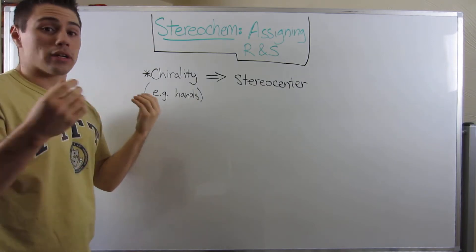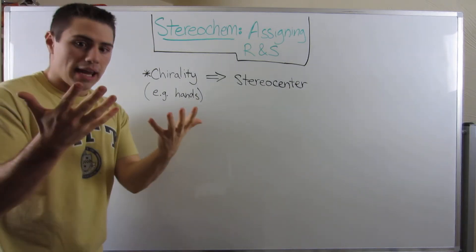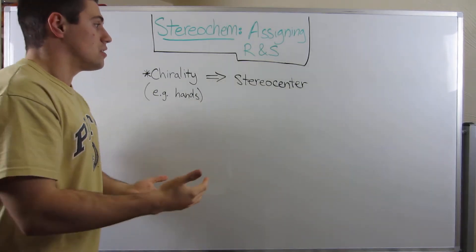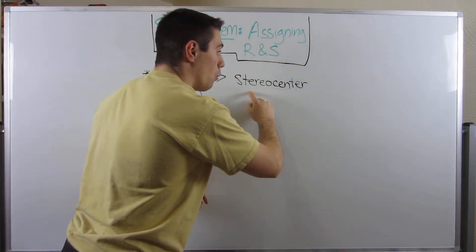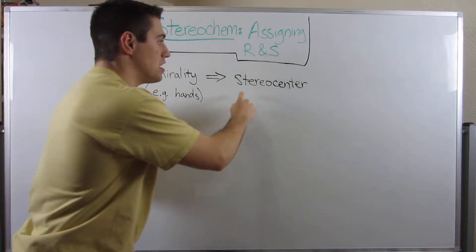Okay, so in the world of organic chemistry, instead of using hands, we're using molecules. So if we have a chiral molecule, there's going to be at least one, at least for our purposes, stereocenter.